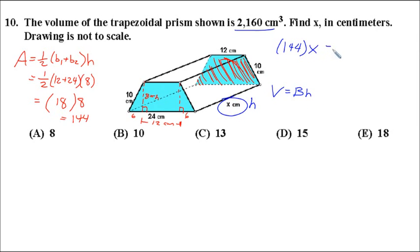So, 144x equals our volume, which is 2160. So, really, we just need to divide by 144. 2160 divided by 144 is 15. So, the answer is D.